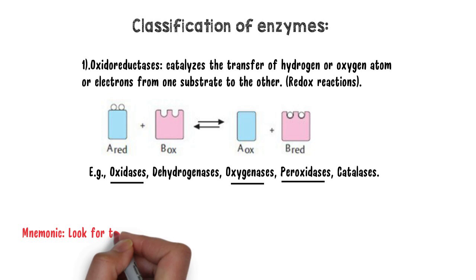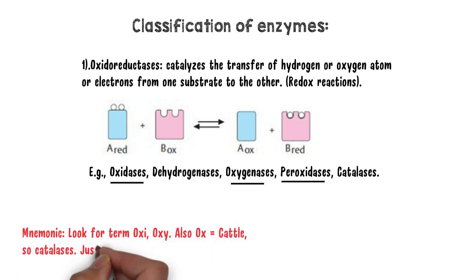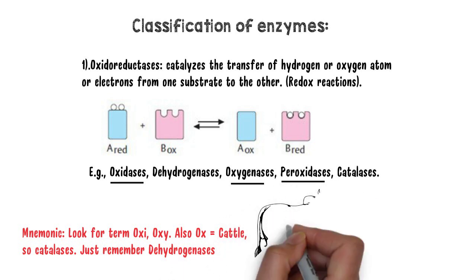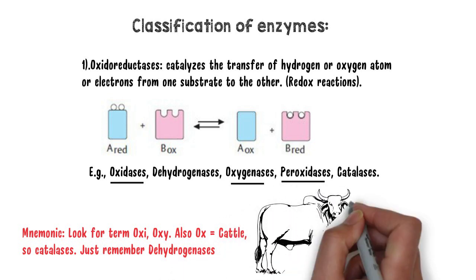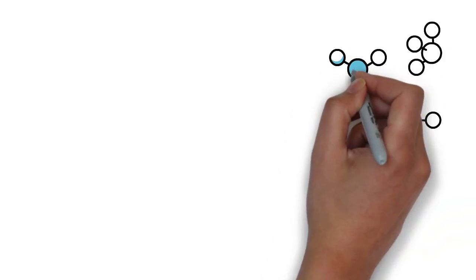The examples of oxidoreductases are oxidases, dehydrogenases, oxygenases, peroxidases, and catalases. Oxidases, oxygenases, and peroxidases are easy to remember because all three enzymes have 'oxy' in their name. Now, ox is also called cattle, so you can easily remember catalases. In addition, just remember dehydrogenases, as dehydrogenases help in redox reactions — there is no mnemonic for dehydrogenases, so you will have to remember this one.